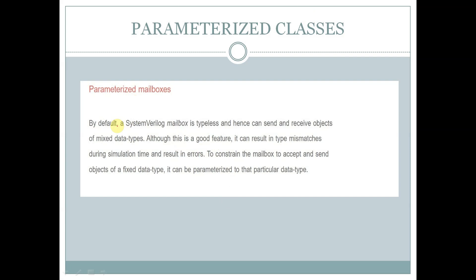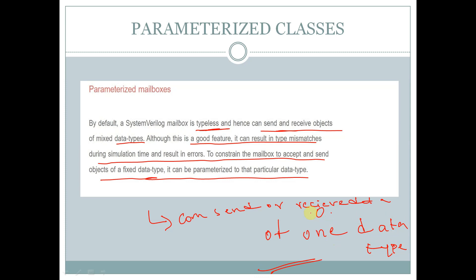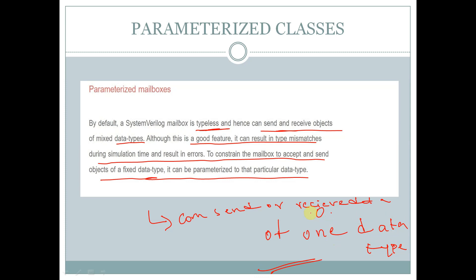Parameterized mailboxes: by default a SystemVerilog mailbox is typeless and hence can send and receive objects of mixed data types. Although this is a good feature, it can result in type mismatches during simulation and cause errors. To constrain the mailbox to accept and send objects of a fixed data type, it can be parameterized. Parameterized mailboxes can send or receive data of only one data type, avoiding type mismatch during simulation.